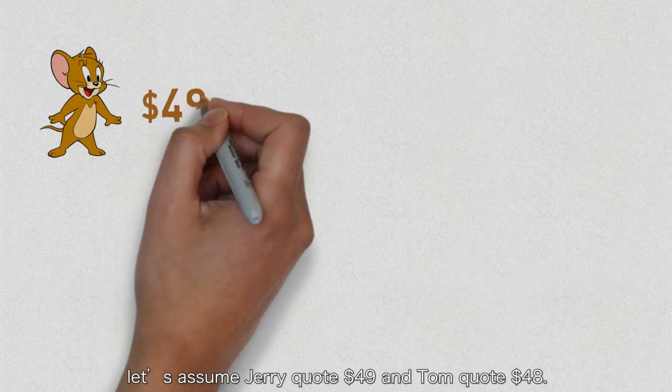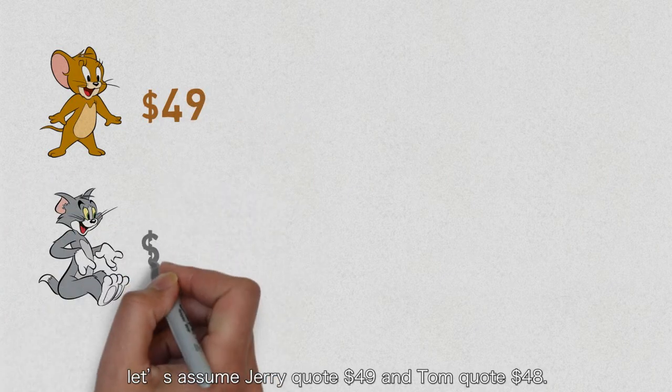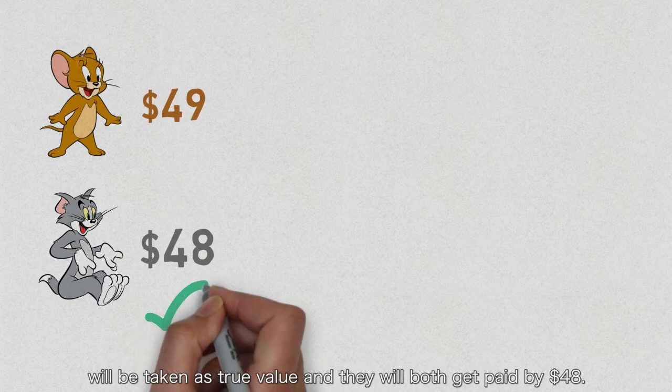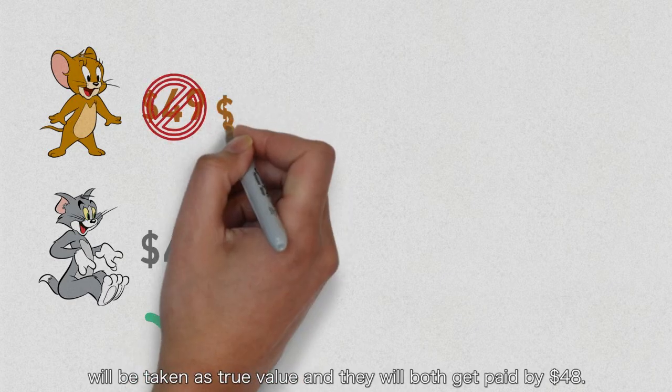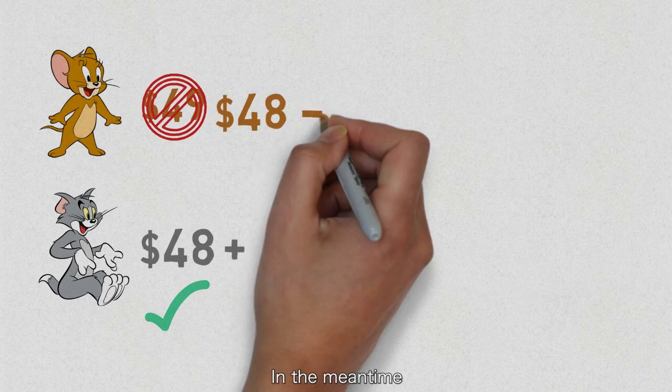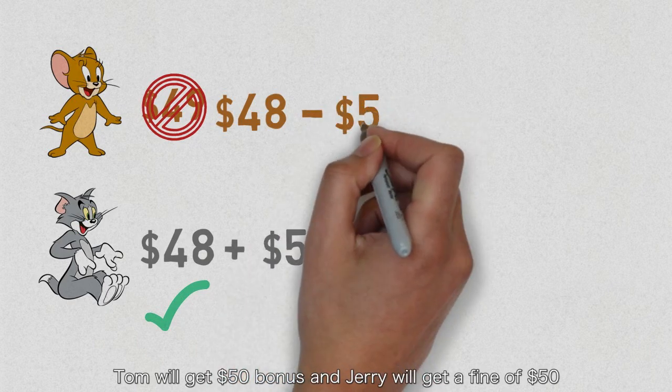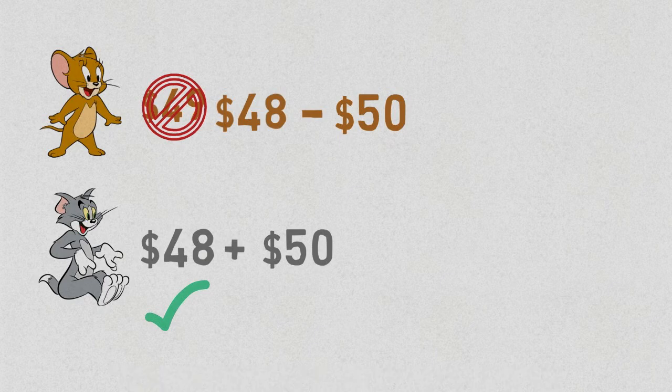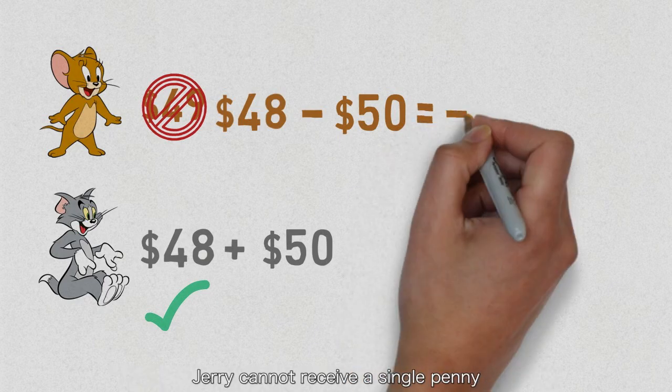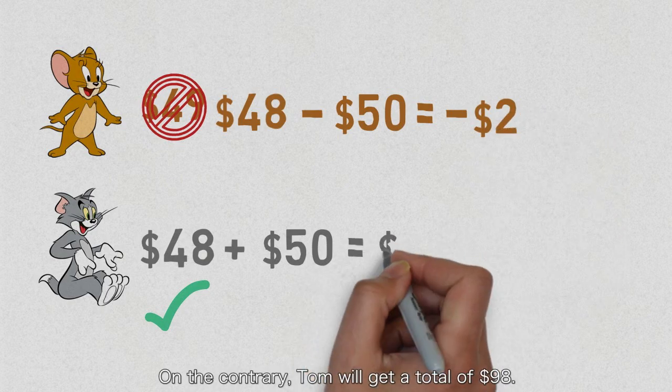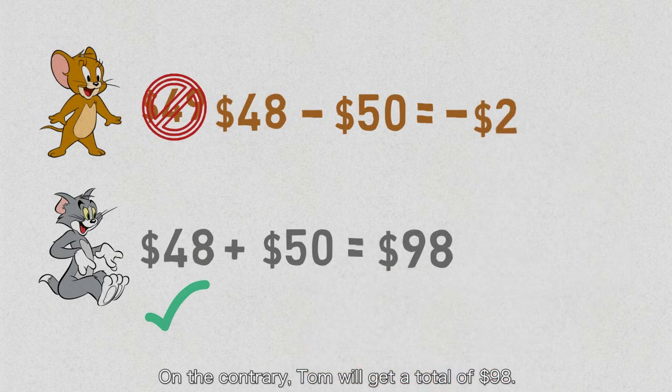The lower value 48 will be taken as the true value and they will both get paid 48. In the meantime, Tom will get a 50 dollar bonus and Jerry will get a fine of 50. So Jerry cannot receive a single penny but also needs to pay two dollars to the airline. On the contrary, Tom will get a total of 98 dollars.